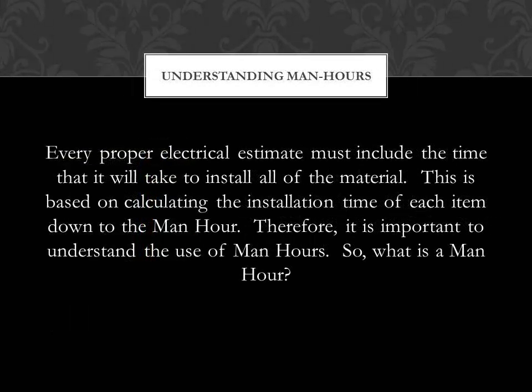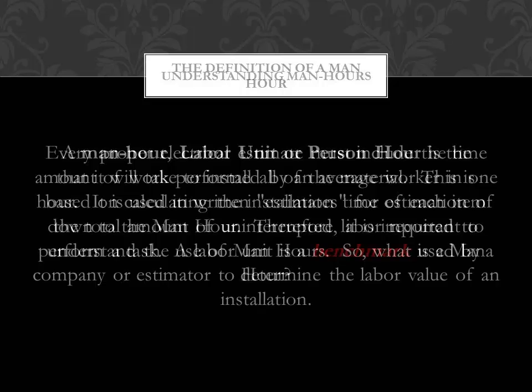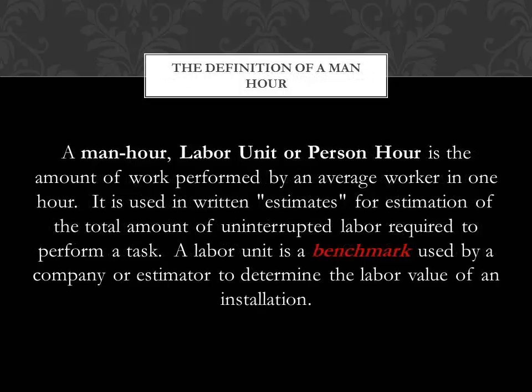Understanding man hours. Every proper electrical estimate must include the time that it will take to install all of the material. This is based on calculating the installation time of each item right down to the man hour. Therefore, it's important to understand the use of man hours. The definition of a man hour is: a man hour, labour unit, or person hour, is the amount of work performed by an average worker in one hour. It is used in written estimates for estimation of the total amount of uninterrupted labour required to perform a task. A labour unit is a benchmark used by a company or estimator to determine the labour value of an installation.